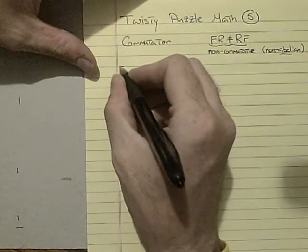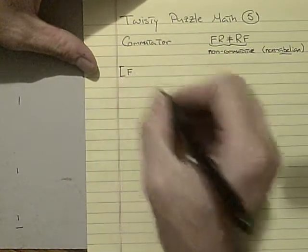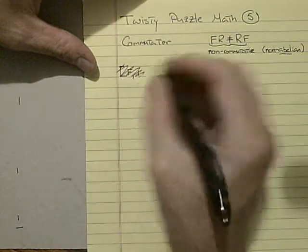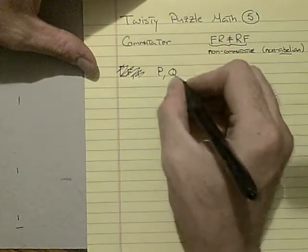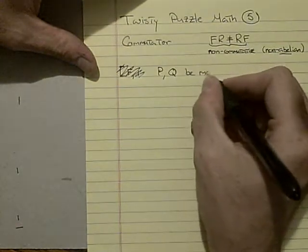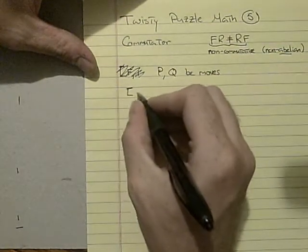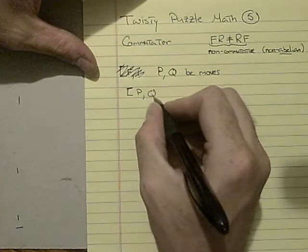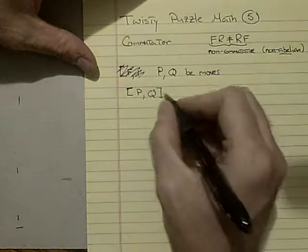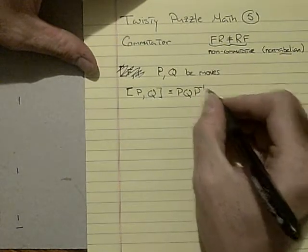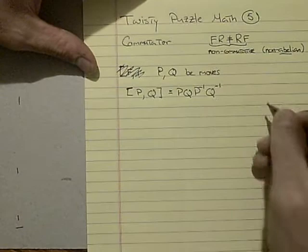So there's some notation. Let's let P and Q be moves you can do. Then the commutator of P and Q is bracket P, comma Q, close bracket. And what that means is do P, then do Q, then do inverse P, then do inverse Q.